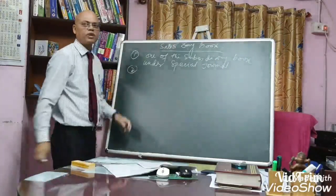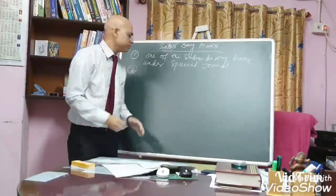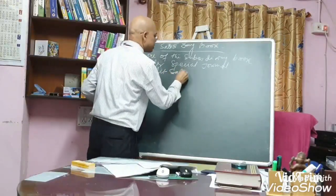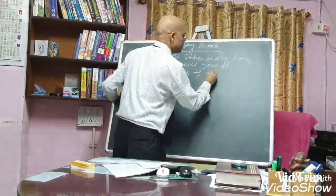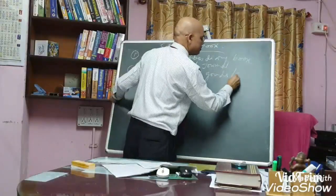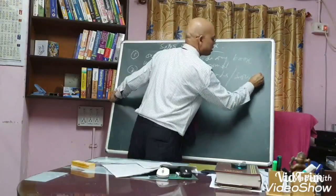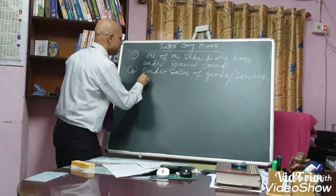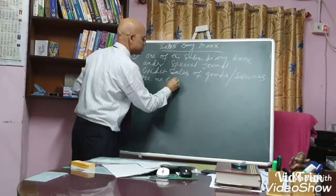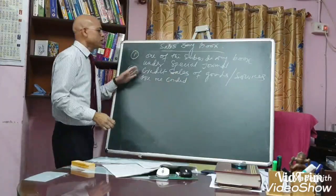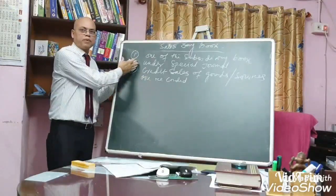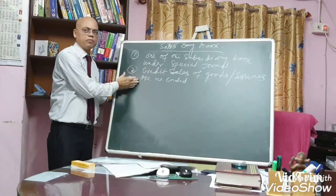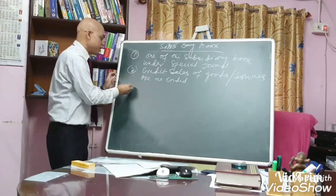Number two: here only the credit sales of goods or services are recorded.